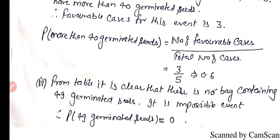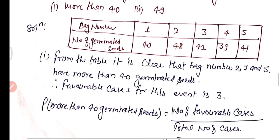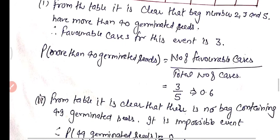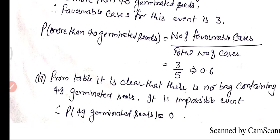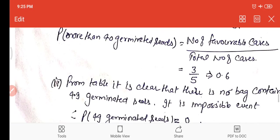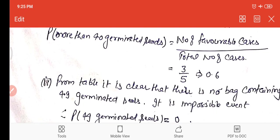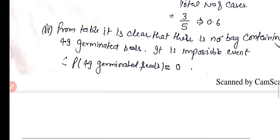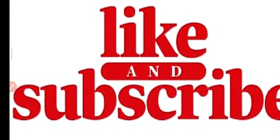For 49 germinated seeds: from the table, there is no bag which contains exactly 49 germinated seeds, so this is an impossible event. The probability of 49 germinated seeds is 0. This is all about worksheet number 35. If you learned from this video, please subscribe to my channel and share this video. Thanks for watching.